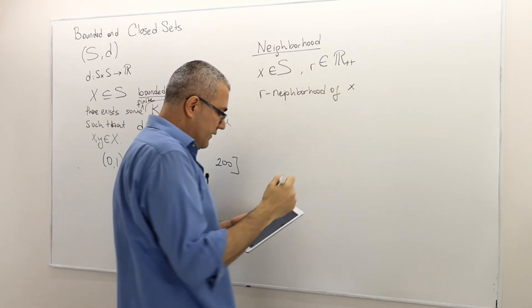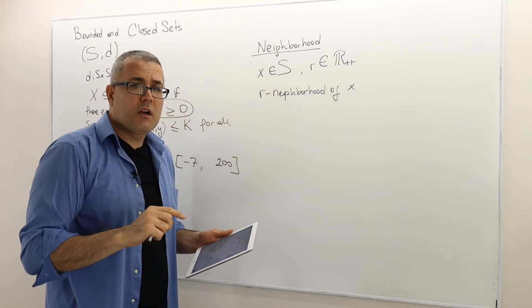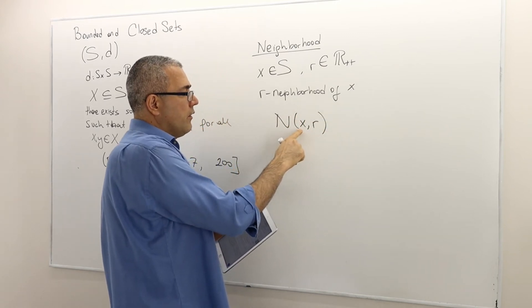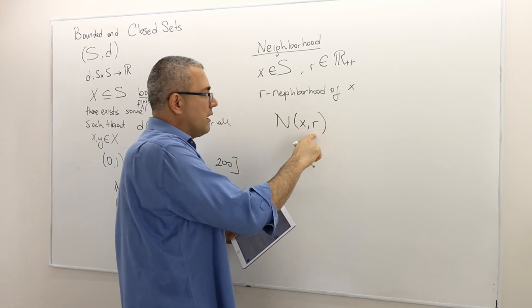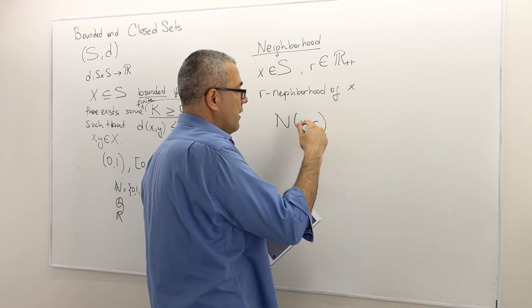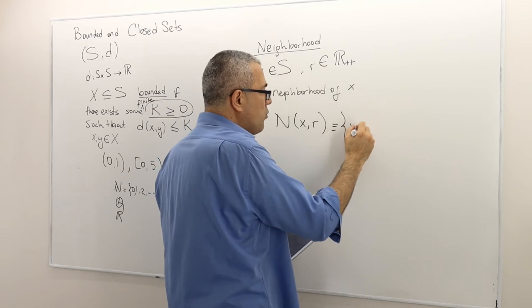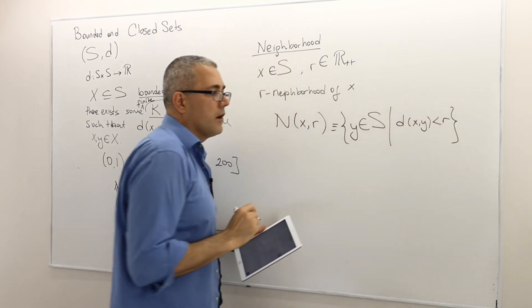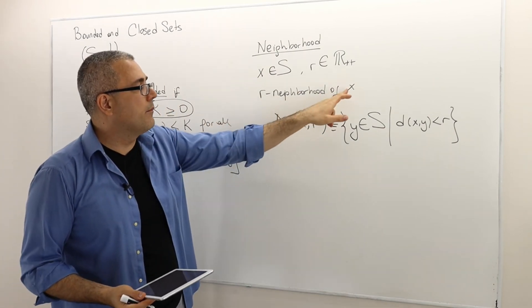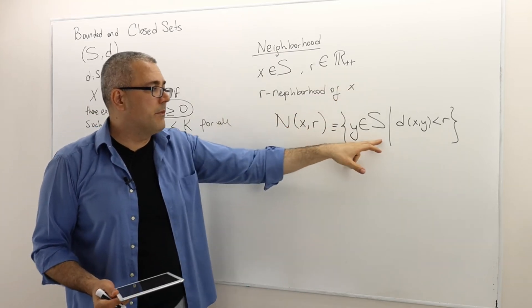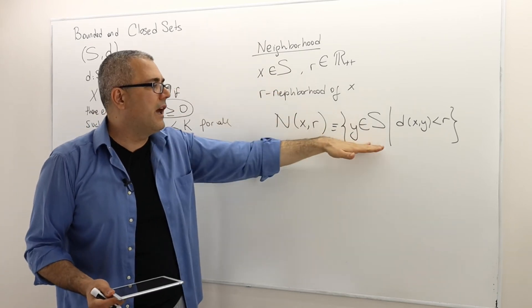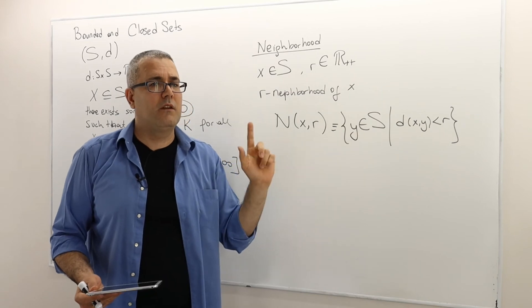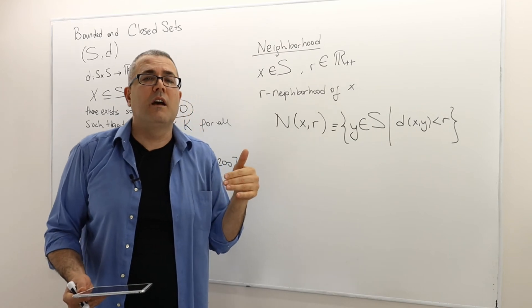The neighborhood of element x, denoted N(x, r), is the set of all points in S which are less than r units away from x. Formally, it's all y in S such that d(x, y) is strictly less than r. So the neighborhood of x consists of all elements in the mother set S that are at most r units away from x — they can be closer, but not farther than r.